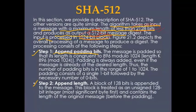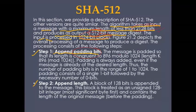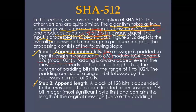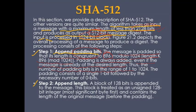There are several steps to generate SHA-512's cryptographic output. Step one: append padding bits — adding padding bits at the end of the message so that the length is congruent to 896 mod 1024. Padding is always added even if the message is already of the desired length. The number of padding bits ranges from 1 to 1024.